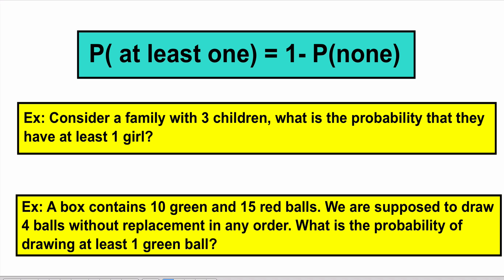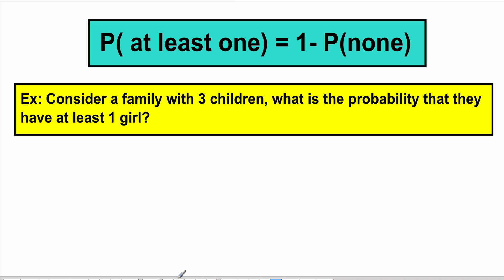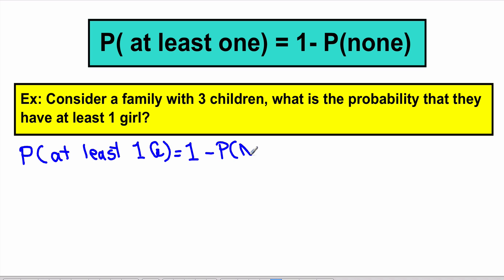The key word in this topic is to look for the phrase 'at least one.' For the family with three children, we want the probability that they have at least one girl. So: probability of at least one girl equals one minus the probability of no girls, which is basically one minus the probability of all boys.